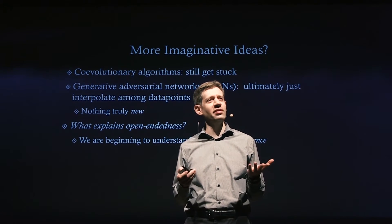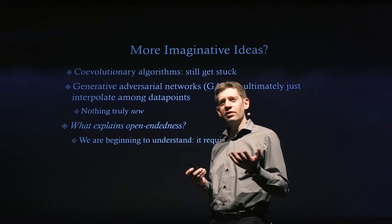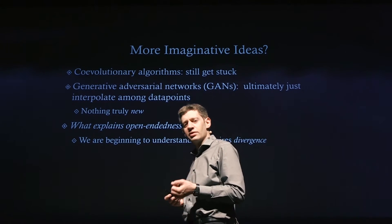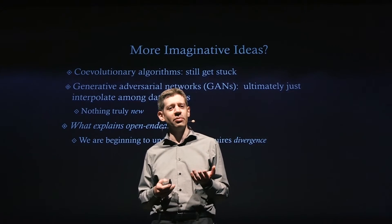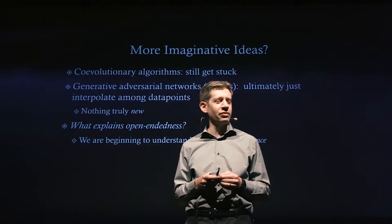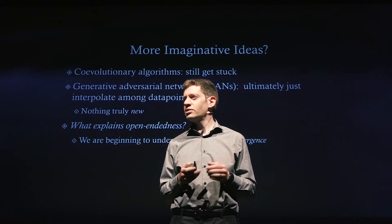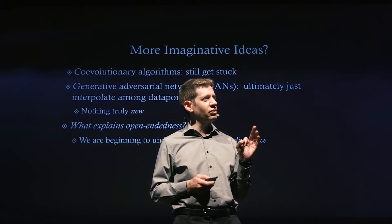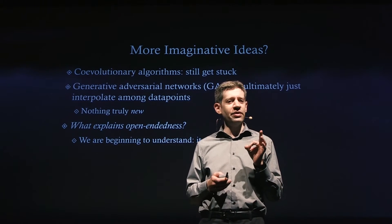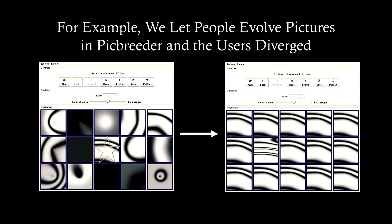So what explains open-endedness? We are beginning to understand in the last few years some of the ingredients. We don't have all of them — if we did, this would probably be front-page news because we'd have the power of creation. But one of the most important ingredients is what's called divergence, which means that things in the search are moving away from each other.